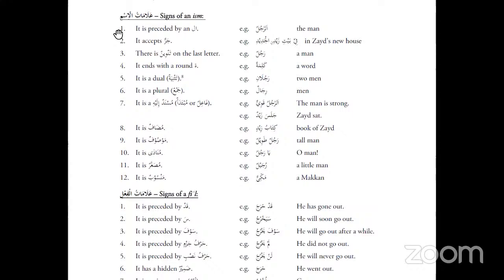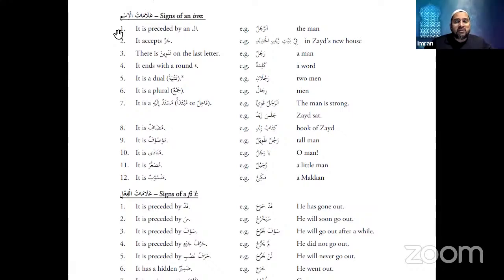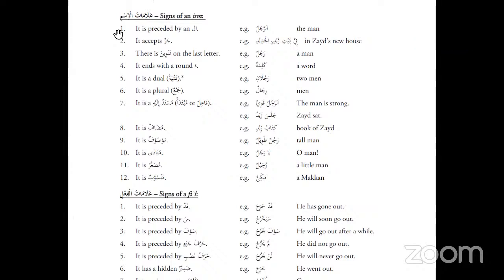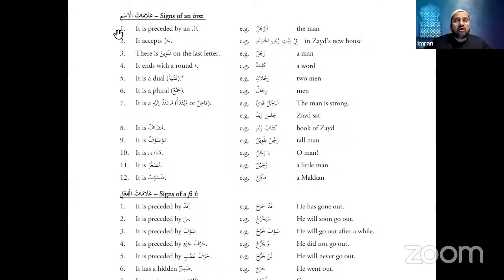When you say 'rajulun' you're referring to a certain individual — it could be any man, any type of individual. So whenever you see alif-lam with a word, you will know that this is a noun, not a verb. That's always a sign.